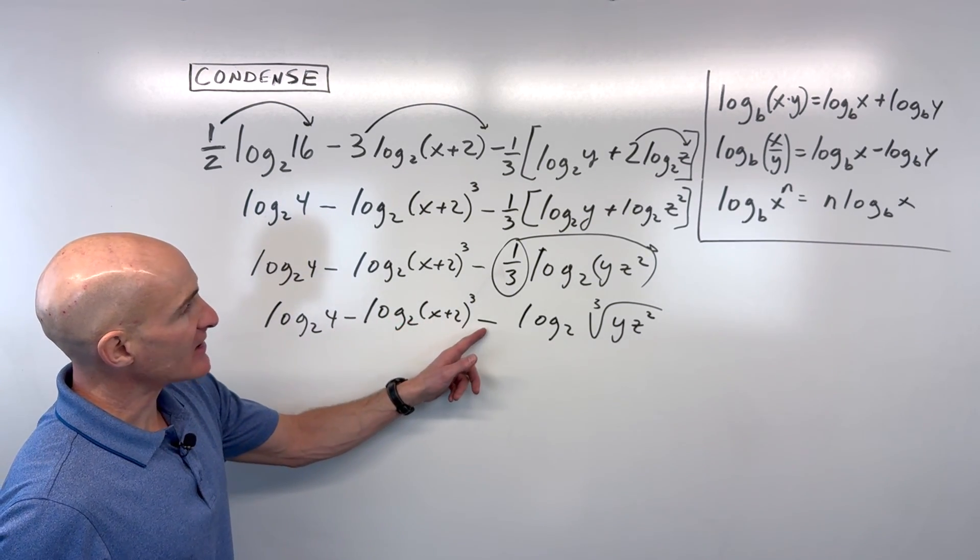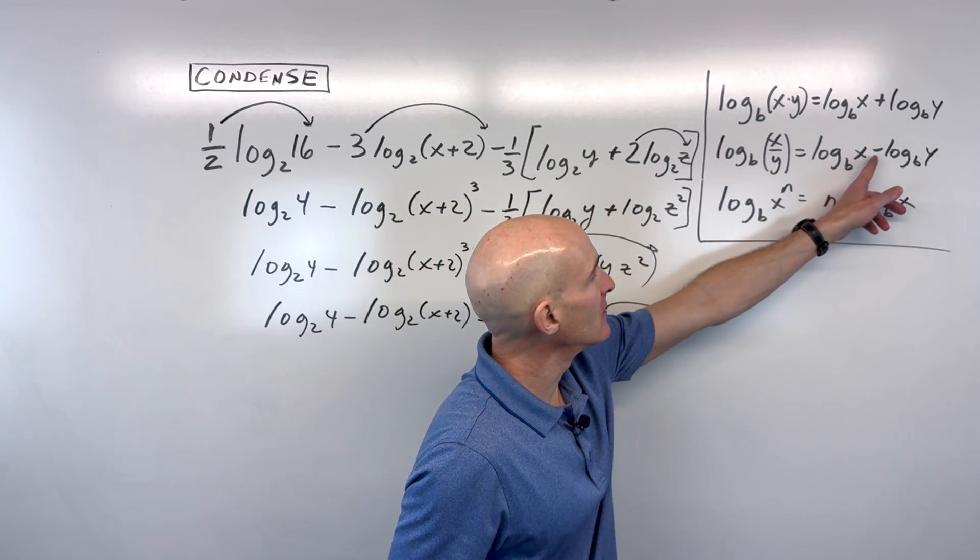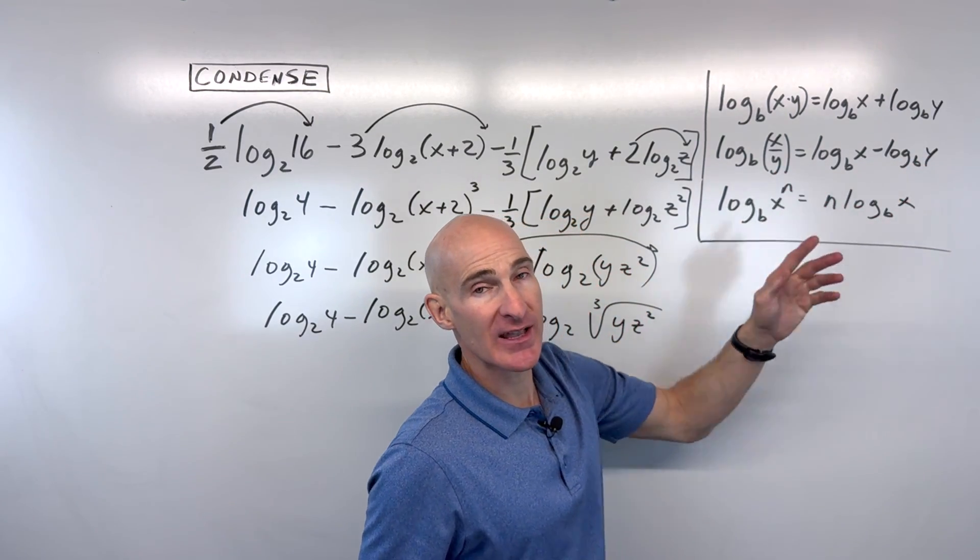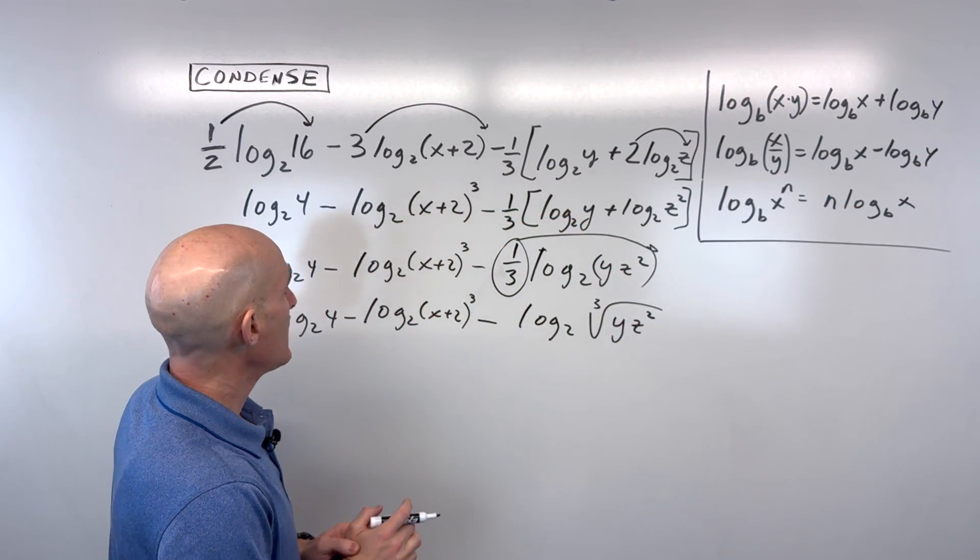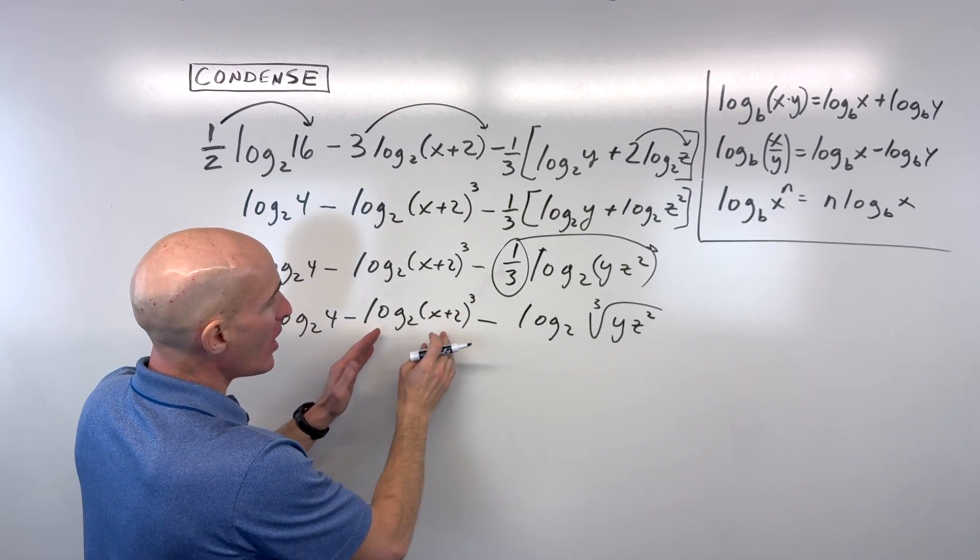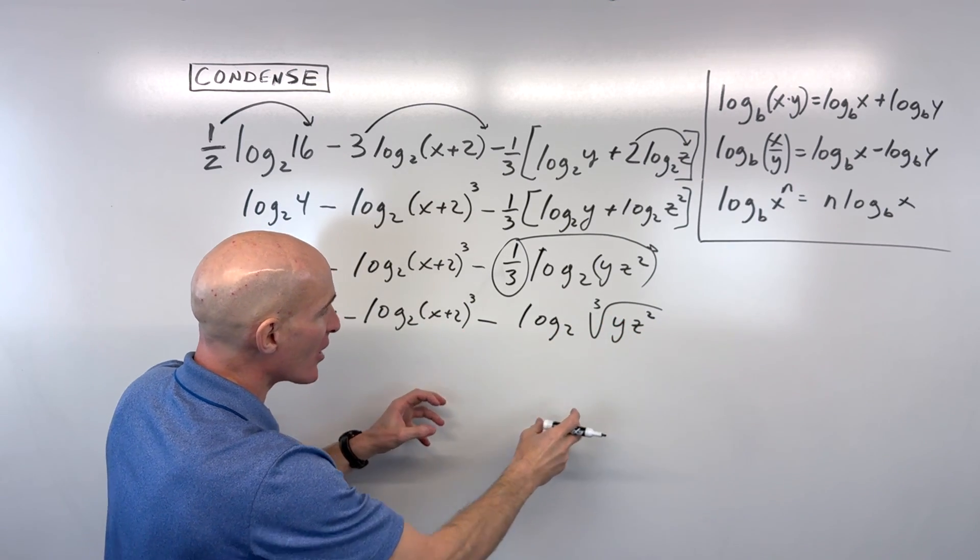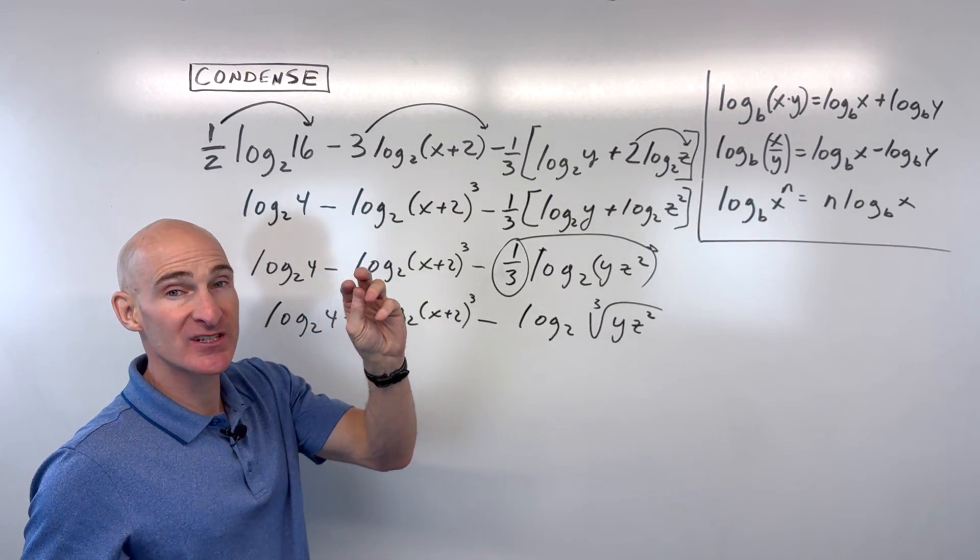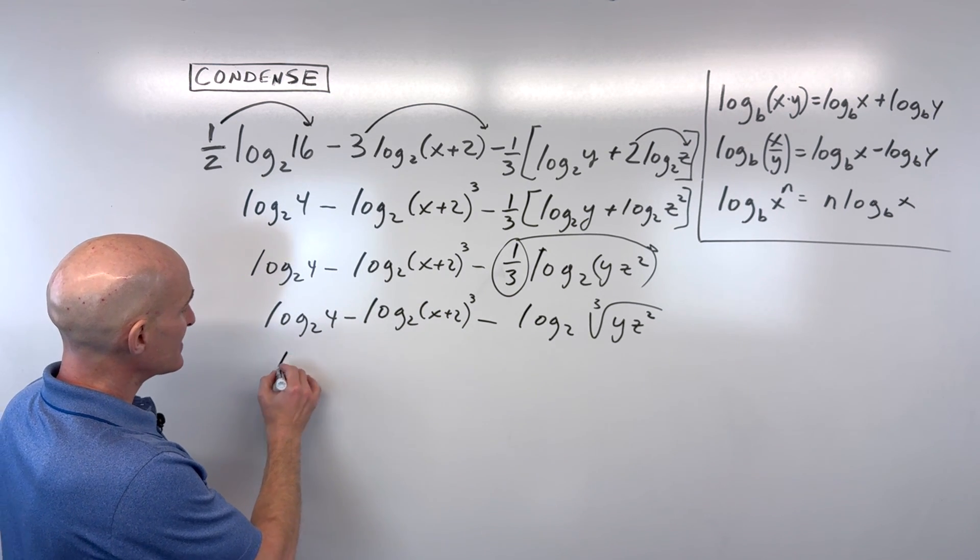Now, you can see we're subtracting. And when we subtract, we know this log that we're subtracting, that argument's going to go in the denominator. That's the quotient property of logs. But here we've got two subtraction problems. So what's going to happen is all the logs where the arguments, where the logs are subtracted, those arguments are going to go in the denominator. All the logs that are positive or added, those arguments are going to stay in the numerator. So if I condense this down,